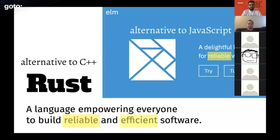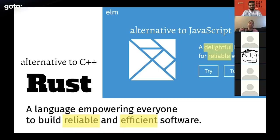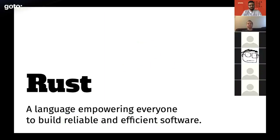Rust self-describes as being efficient — runtime performance is very important to Rust as an alternative to C++. Elm on the other hand self-describes as being delightful, more interested in developer experience and ergonomics, even if that means sacrificing some efficiency. The biggest difference is scope: Elm is focused on browser-based UIs, whereas Rust targets a much wider swath of possible applications — the narrower the focus, the easier it is to do one thing well.